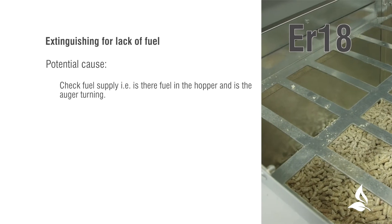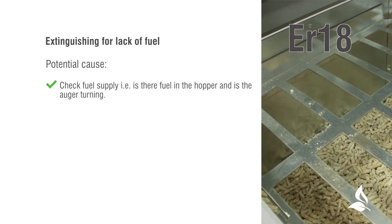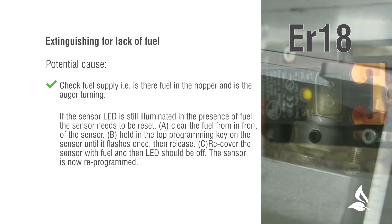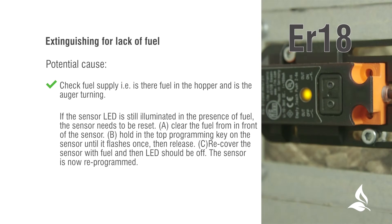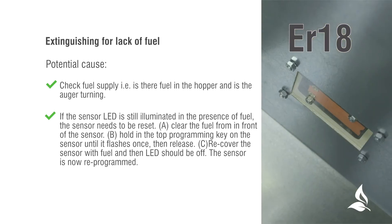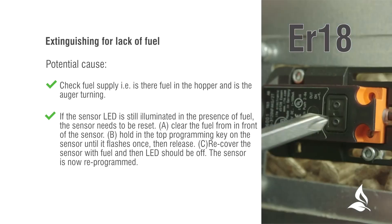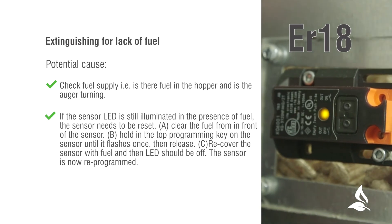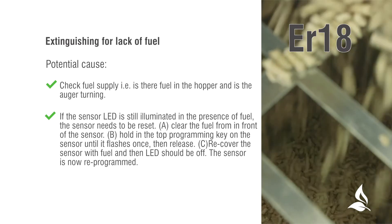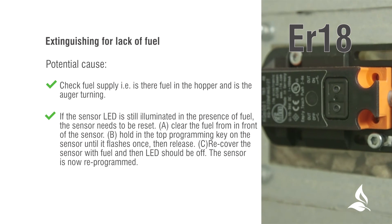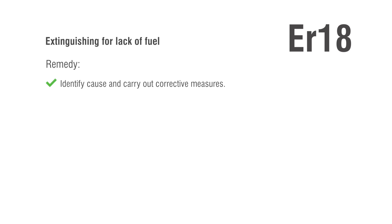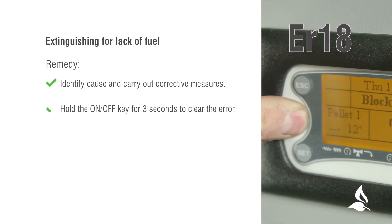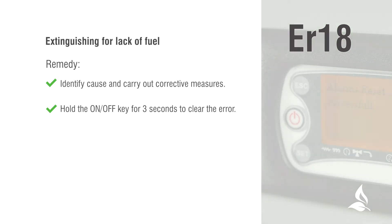Extinguishing for lack of fuel. Potential cause: check the fuel supply — i.e., there is fuel in the hopper and the auger is turning. If the sensor LED is still illuminated in the presence of fuel, the sensor needs to be reset: clear the fuel from the front of the sensor, hold in the top programming key on the sensor until it flashes once then release, recover the sensor with fuel and the LED should be off — the sensor is now reprogrammed. Remedy: identify the cause and carry out corrective measures. Hold the on-off key for 3 seconds to clear the error, then restart the boiler.